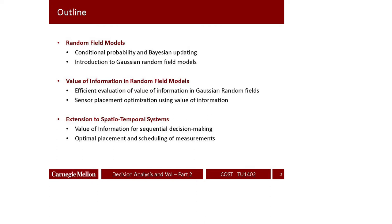I will introduce the idea of Gaussian processes — Gaussian random fields — for modeling distributed systems. Carl will then talk specifically about value of information in these fields: how to compute it effectively for purposes such as sensor placement. We will end by discussing how to extend this formulation to spatial-temporal processes, including not just space but also time.